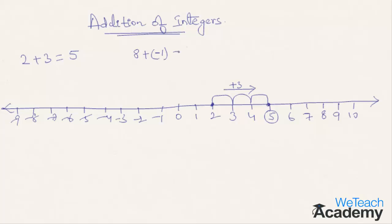Let's show the same example in the form of adding a negative number. In this case, the expression is 8 plus minus 1. The first thing you need to do is mark the number 8 on the number line, following which you need to move one step towards the left because we are adding minus 1. If it was minus 5, you would move 5 steps towards the left. So, 8 moved one step towards the left stops at 7, which is the answer of 8 plus minus 1.